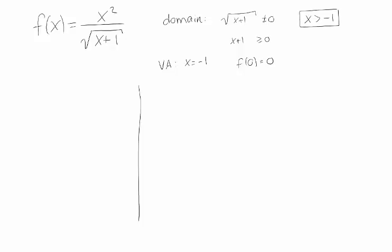Also, this function's never going to be negative. Because the top is never negative and the bottom is never negative. So we've got our intercept and our vertical asymptote.